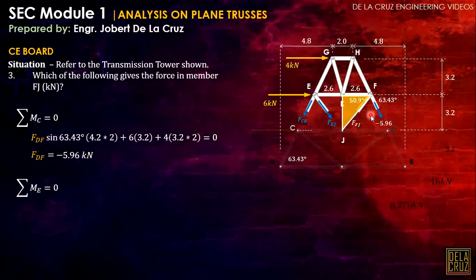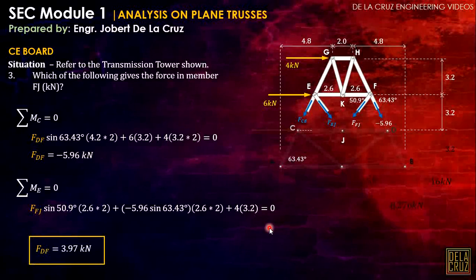So next, moment about E na. That is FFJ sine of 50.9, the vertical component of that, times the moment arm is 2.6. Then dalawa siya. Next, plus the vertical component of 5.96, but take note, maintain the negative sign. Then sine of 63.43 degrees. The same moment arm, 2.6 times 2 is 5.2. Next, plus 4 times 3.2. This force won't create moment about E. And that is the answer for part 3.